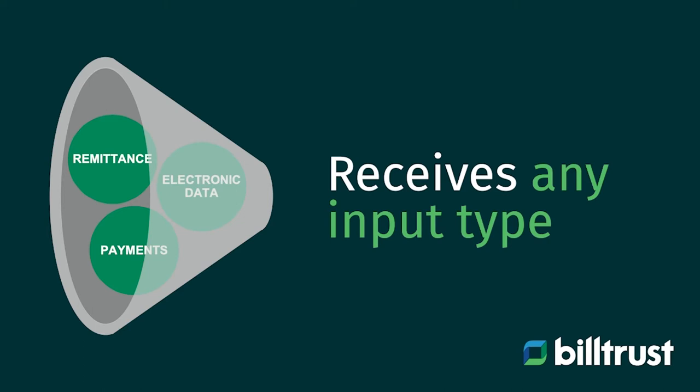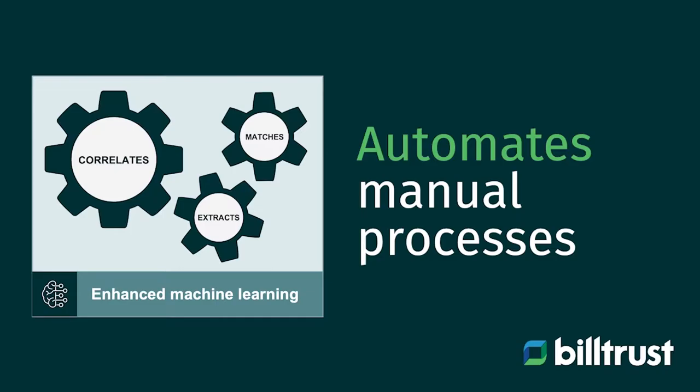We take payments, remits, and electronic data and intelligently scrape that data to match it against your open receivables. This is done automatically as soon as payments or remits come into the system to assist with your auto match rates when applied to your open AR. Once we get data from our machine learning extraction, we correlate it to a payment, extract that data, and match it against an open receivables file that you provide from your ERP system.